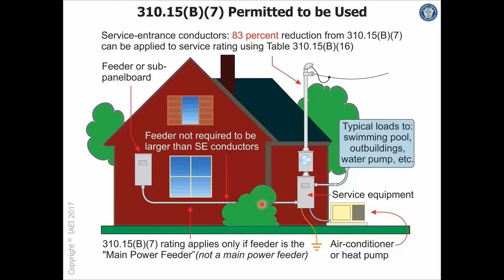In this case, I would not be able to use 310.15(B)(7) on that feeder because that feeder does not provide power to the entire dwelling unit — as you can see, my air conditioner comes off of this panel board back here, and there are also some branch circuits going out to swimming pools, outbuildings, and things like that.